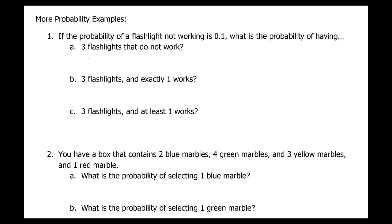The first problem: the probability of a flashlight not working is 0.1. Using n for not working, P(n) = 0.1, which means the probability that it works, P(w), has to be 0.9. That's the complement — there are only two options: it works or it doesn't work.